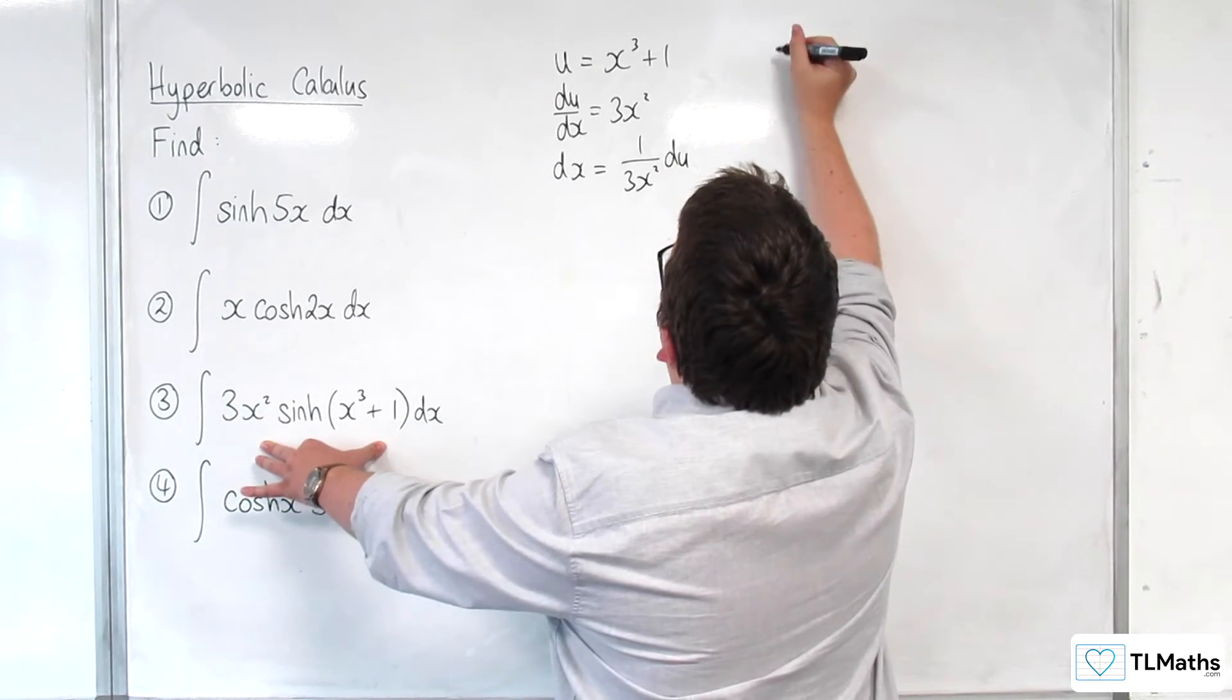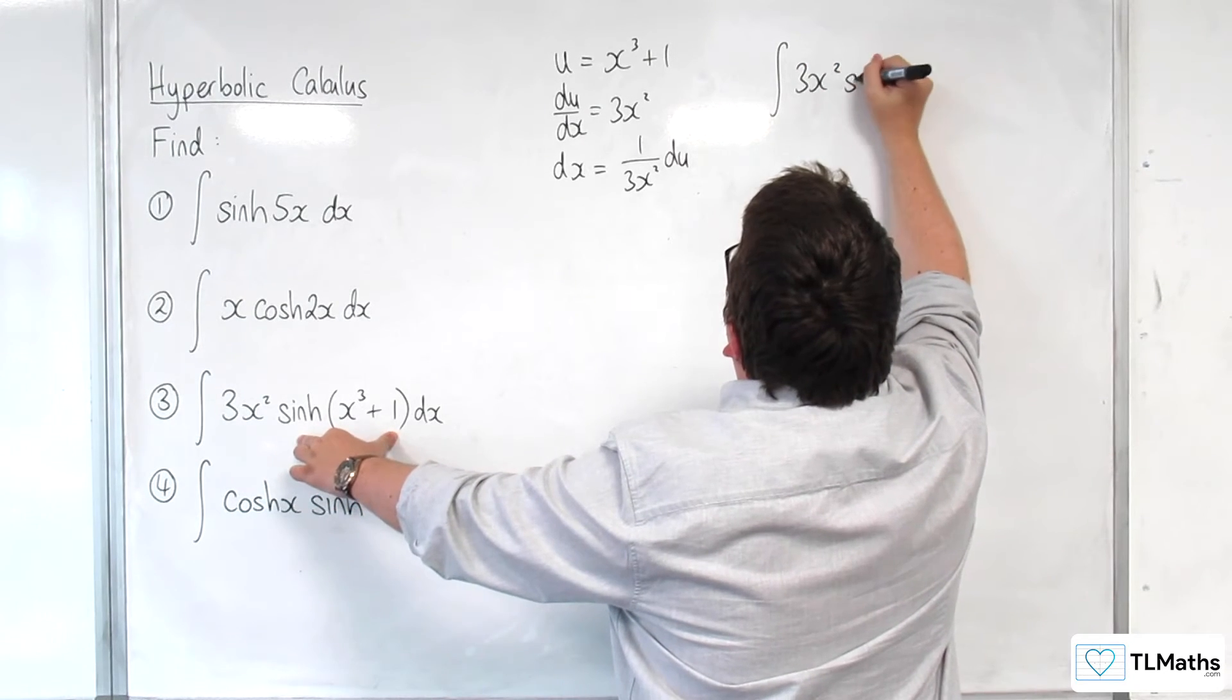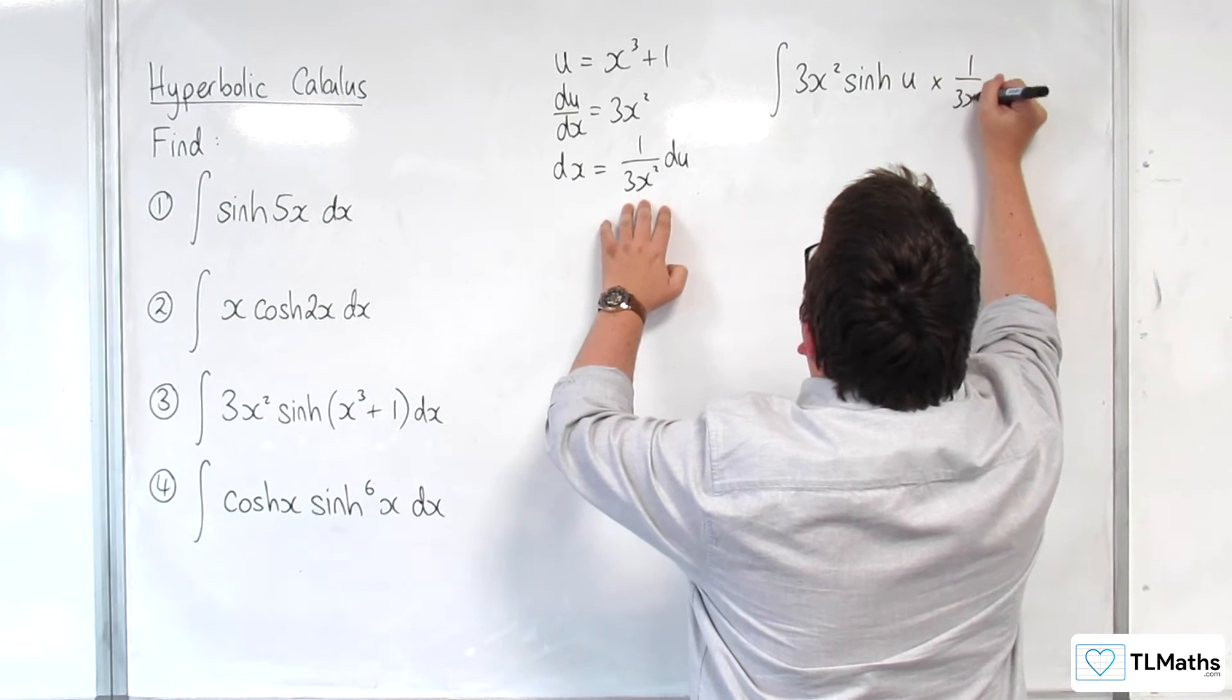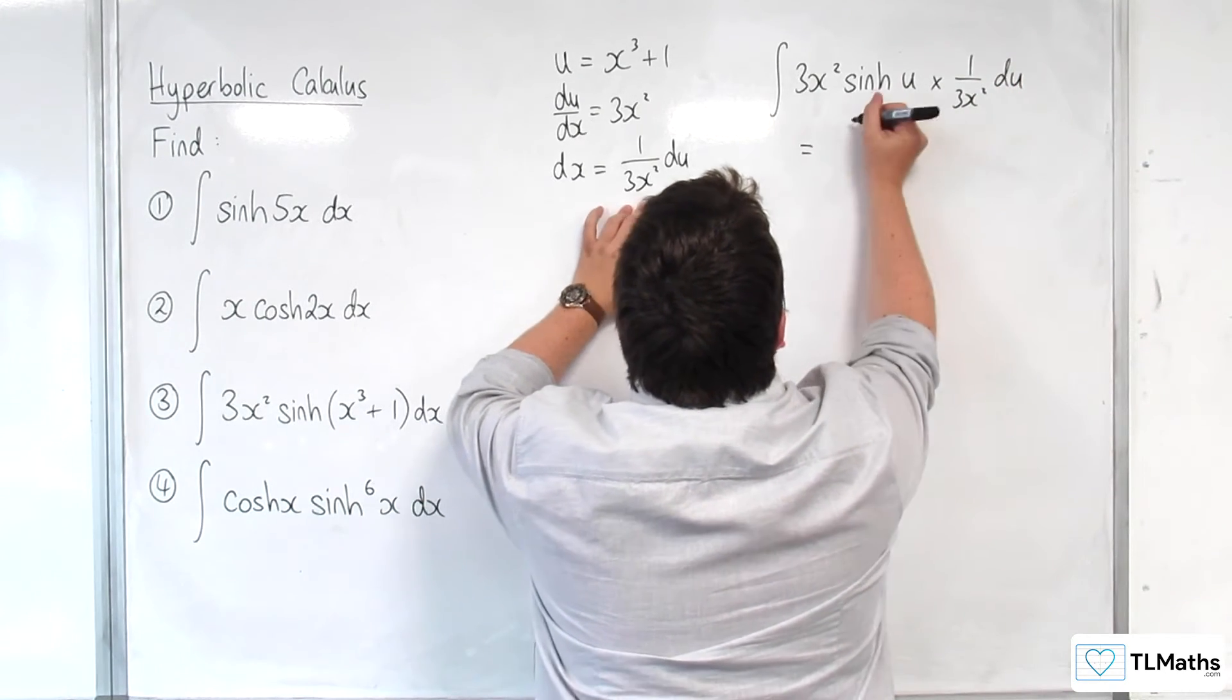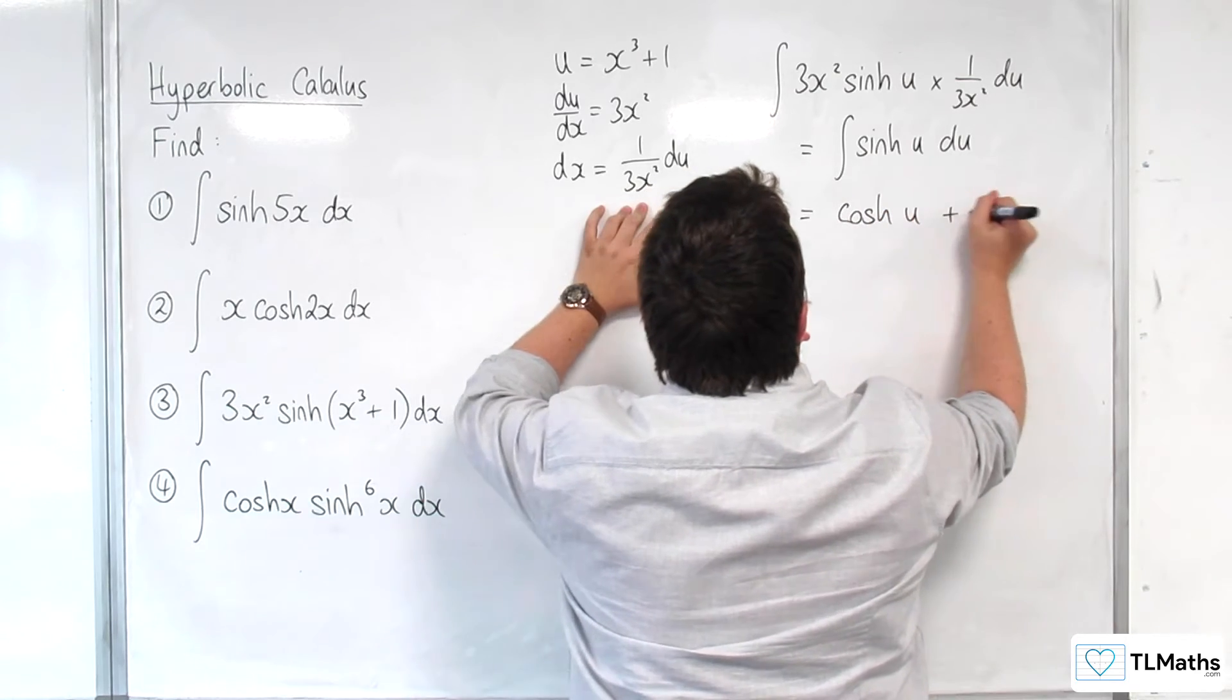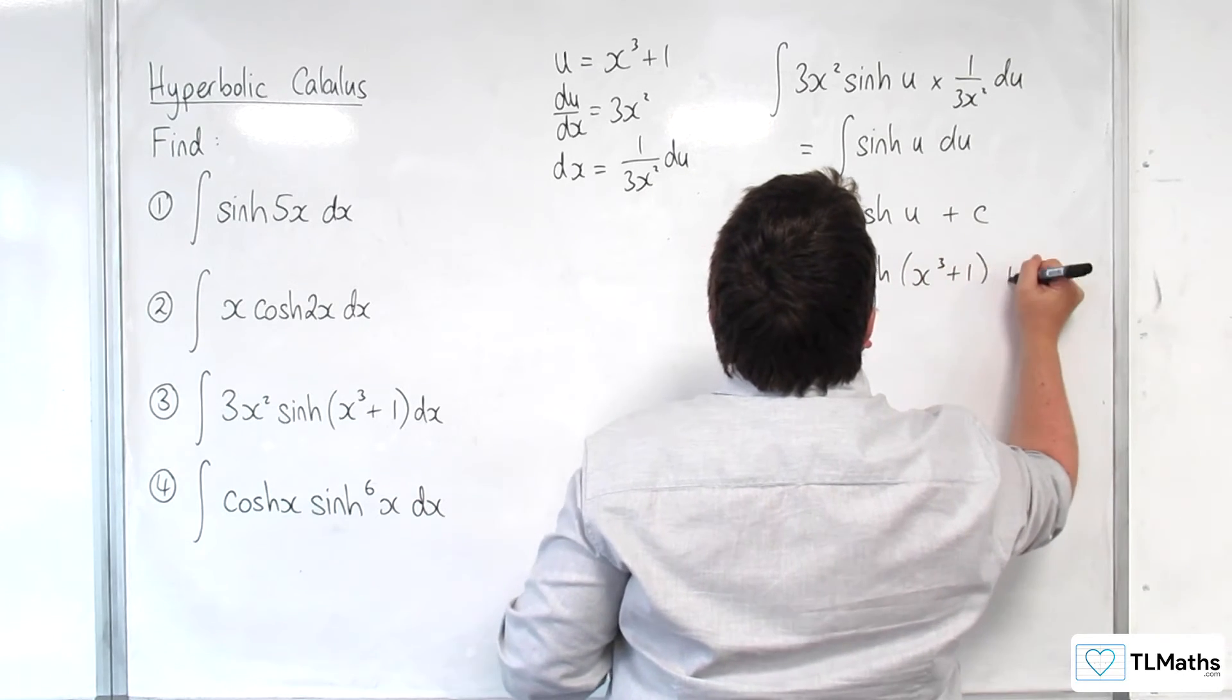So let's get our integral. So we'll have the integral of 3x squared times sinh of u. And the dx is replaced with 1 over 3x squared du. So the 3x squareds cancel. And I've got the integral of sinh of u du, which is cosh of u plus c. And put the u back in. So cosh of x cubed plus 1 plus c.